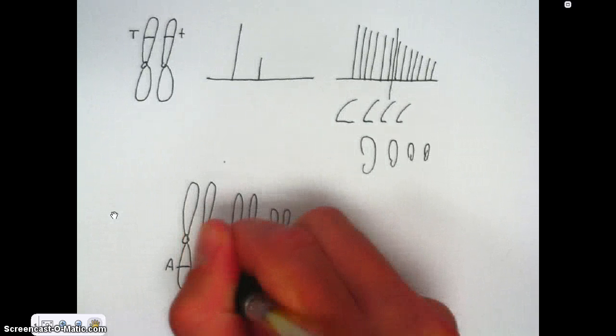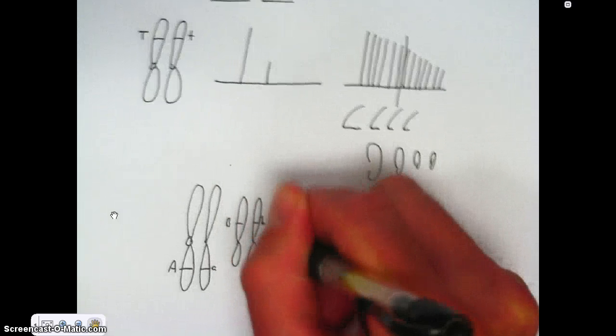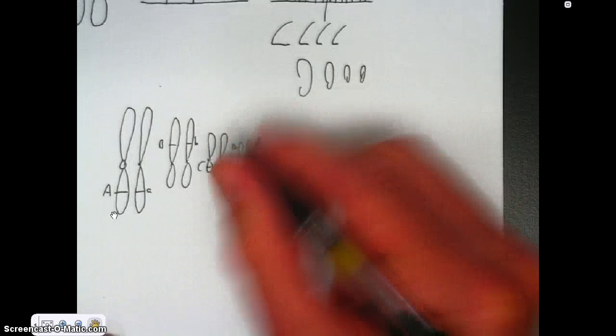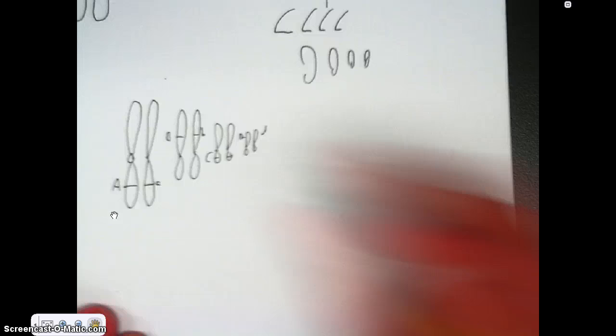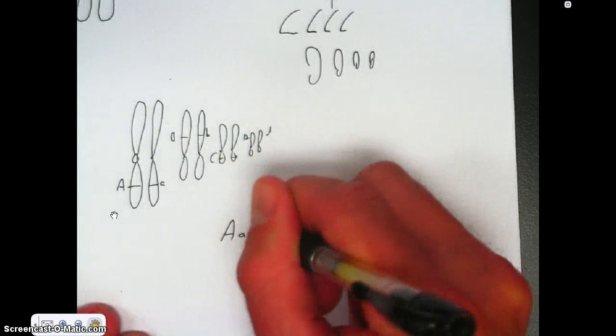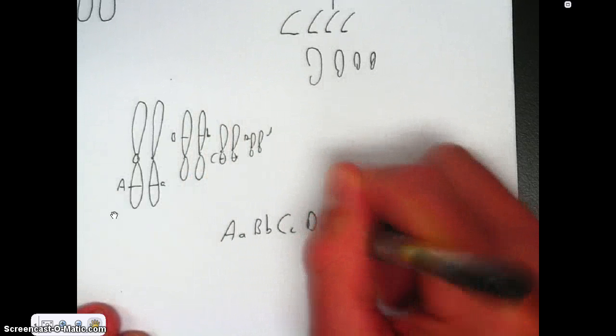So I'm going to say that this organism is big A little a, big B little b, big C little c, and big D little d. So this organism's genotype, we'll say for height, is going to be big A little a, got one of these alleles from mom, one from dad, big B little b, big C little c, and big D little d.